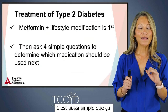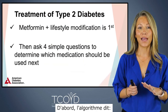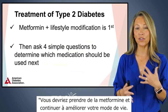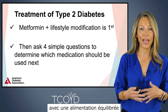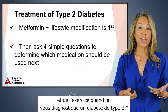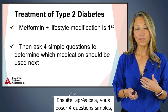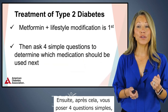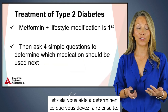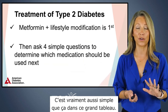It's actually quite simple. The algorithm says you should take metformin and still do lifestyle modification with diet and exercise when you're diagnosed with type 2 diabetes. After that, you want to ask four simple questions, and those help you determine what to do next. It's really that simple within that whole big chart.